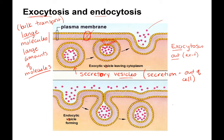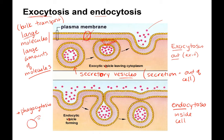Just the opposite is endocytosis, which means taking something inside the cell. This is a way that cells can bring in mass molecules. A classic example of phagocytosis is when a macrophage, which is a white blood cell of your immune system, eats a bacteria. The macrophage will basically reach out, surround the bacteria, bring it in, and destroy it. Phagocytosis is what we call cell eating.